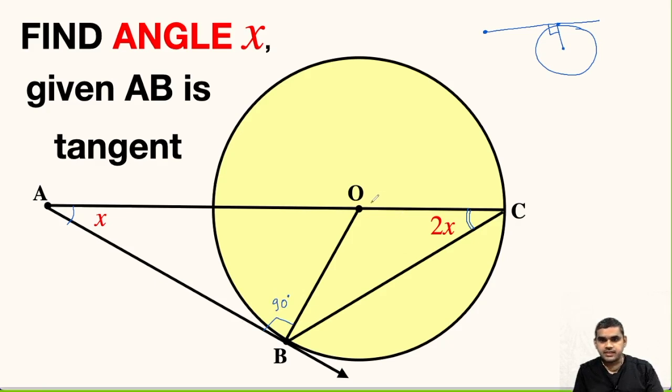Also if we see OC is the radius of the circle, OB is also the radius of the circle and hence this length is equal to this length. This in turn will give us angle OBC also equal to 2x degrees.